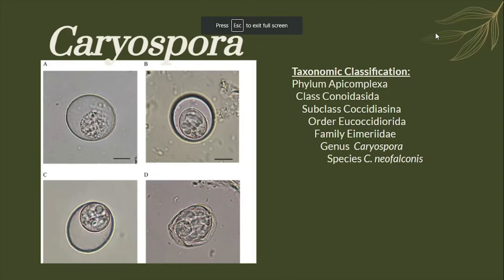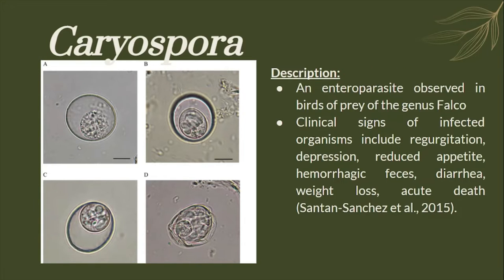For the genus Caryospora, we have Caryospora neofalconis. This is an entero-parasite observed in birds of prey under the genus Falco. It is reported to have a prevalence in Mexico and America. Its clinical signs in an infected organism include regurgitation, depression, reduced appetite, hemorrhagic feces, diarrhea, weight loss, and acute death.